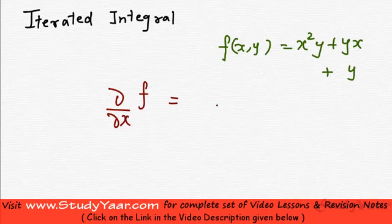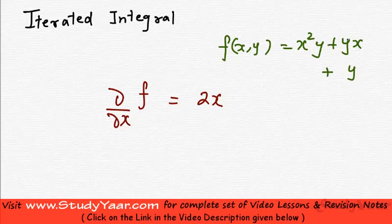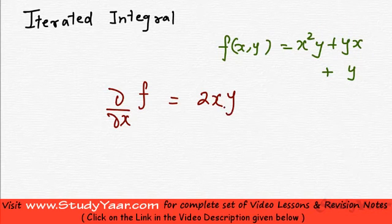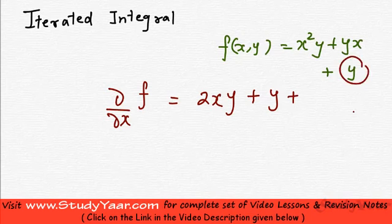It is going to be 2x. When we do partial differentiation, we assume y is a constant. So my partial differentiation is going to be 2x times y plus y plus 0.